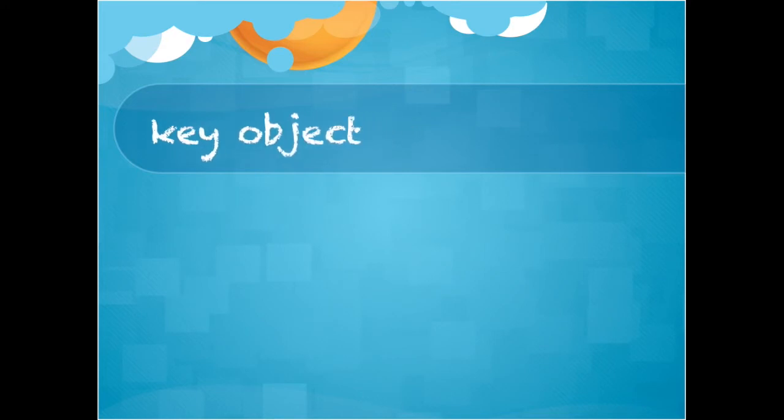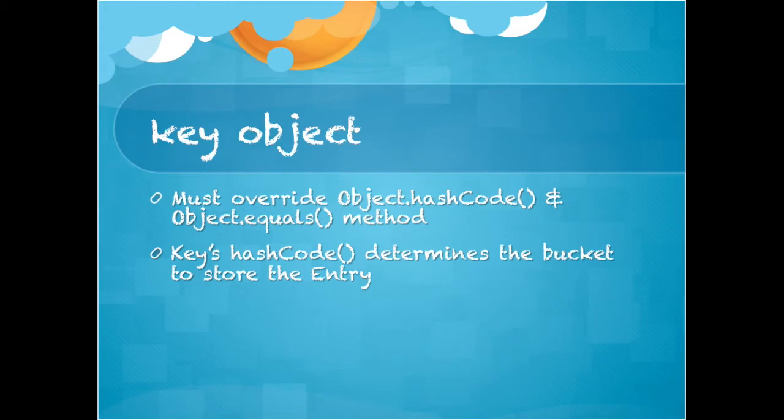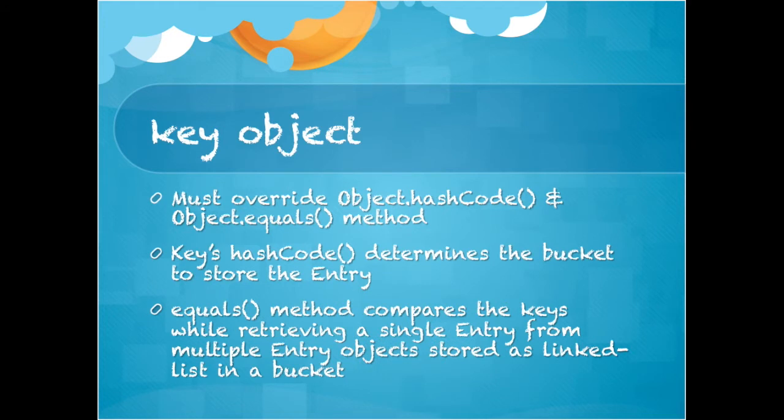Let us first understand the key object. The key object of a hash table must override object.hashCode and object.equals methods. The key's hash code determines the bucket where to store the entry. The equals method compares the keys while retrieving a single entry from multiple entry objects stored as a linked list in a bucket.